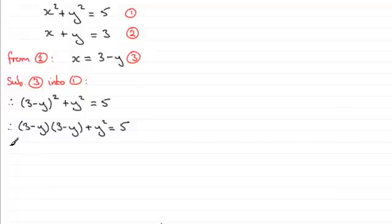So expanding this now, what we get is 3 times 3, 3 squared in other words, which is 9. We get 3 times minus y, and then we get minus y times 3 here. So we get twice minus 3y, a total of minus 6y. And then we get the last term squared, minus y times minus y is plus y squared. And then we have the last term here on the end, plus y squared. And that equals 5.